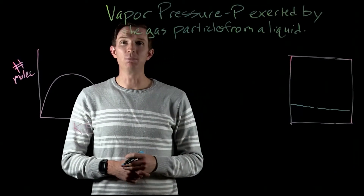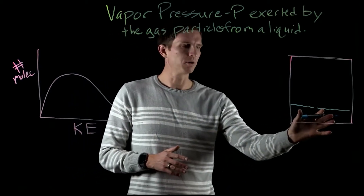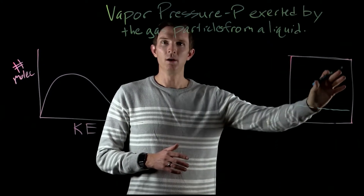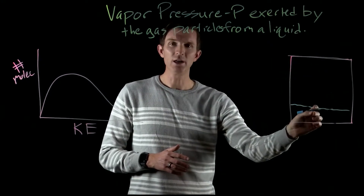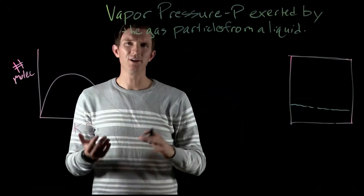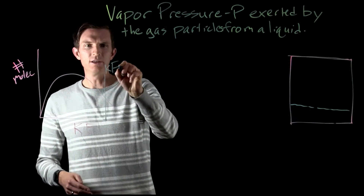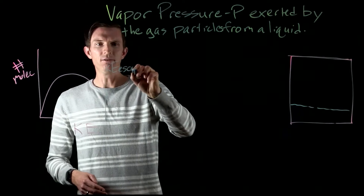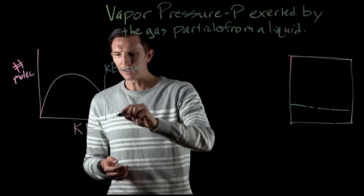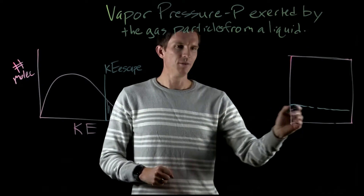Let's think about this idea of vapor pressure. Vapor pressure is the pressure that liquid particles exert as they evaporate inside a container, because they are evaporating from the liquid. We talked about in a previous video why molecules have the capacity to evaporate — they have an escape kinetic energy. Some molecules sitting on the surface have a kinetic energy greater than the escape kinetic energy, and those molecules will go ahead and leave.